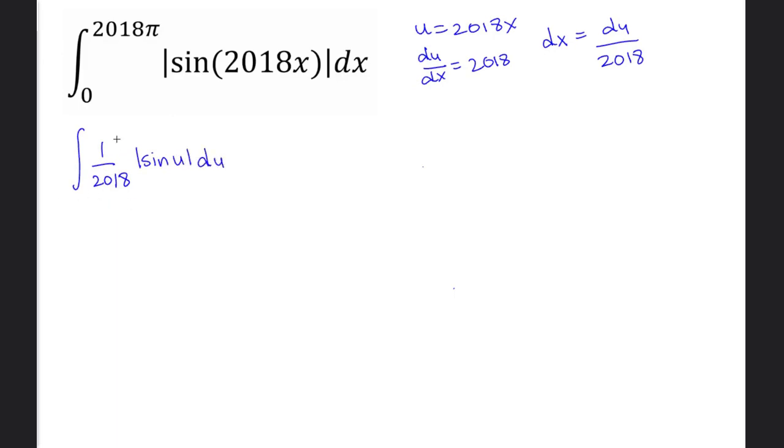Let's find the bounds of this integral. 0 times 2018 is still 0, but 2018π times 2018 equals 2018²π.